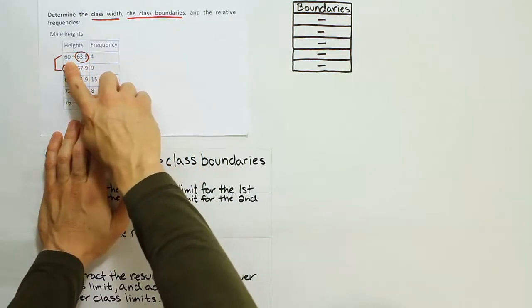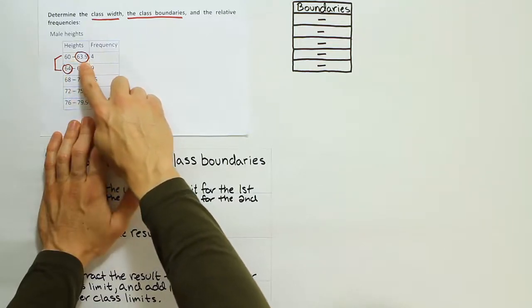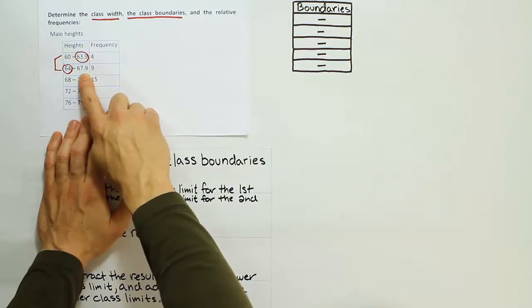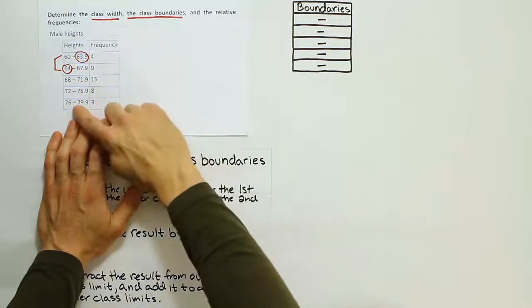This first number, 60, is called the lower class limit of the first class. This number, 63.9, is called the upper class limit of the first class. The number down here, 64, is the lower class limit of the second class, and 67.9 is the upper class limit of the second class. And then so on and so forth throughout the table.